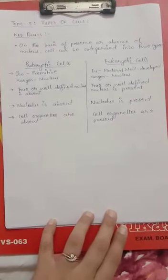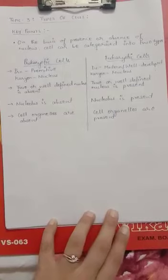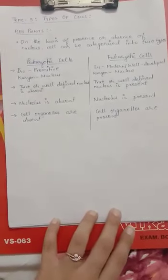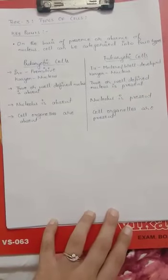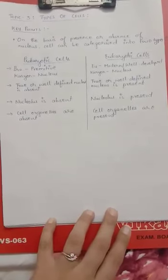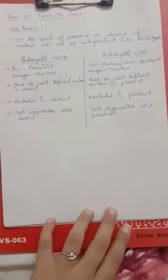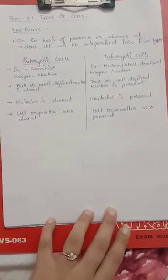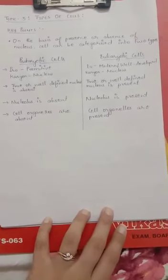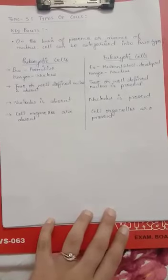Let's come to prokaryotic cells. 'Pro' means primitive, 'karyon' means nucleus. So prokaryotic cells are those types of cells which have a primitive nucleus — meaning the nucleus is not properly developed. Such types of cells are known as prokaryotic cells.